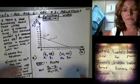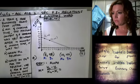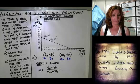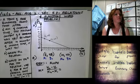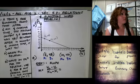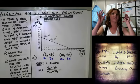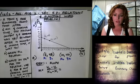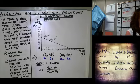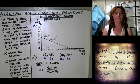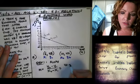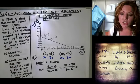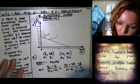The slope formula is (y₂ − y₁) / (x₂ − x₁). Plugging in our values: (40 − 48) / (10 − 6). That comes out to negative 8 over 4, which is negative 2.